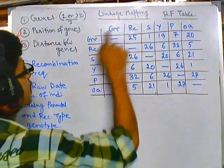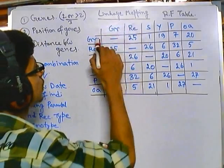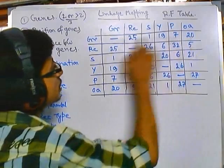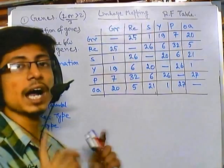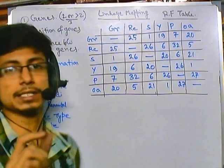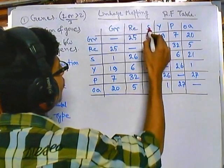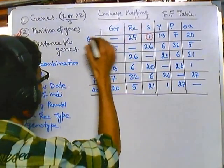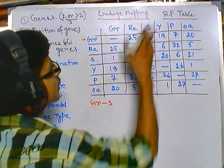So in the GR row, GR with GR means the same gene — there's no crossover, so it's a dash. For GR with RC, the recombination frequency is 25, which is the highest in that row, meaning GR and RC are the farthest apart. So we cannot put GR right next to RC. We need to find the least frequency and go towards the higher frequency. The least here is GR with S, which is frequency 1 — meaning GR and S are placed really close to each other. So let's put GR first and then S right after it.